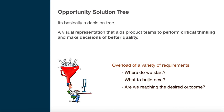The Opportunity Solution Tree, as the name goes, is a decision tree. It is a visual representation that aids product teams to perform critical thinking and make decisions of better quality — so teams can make the right decisions in terms of whether they are building the right product.